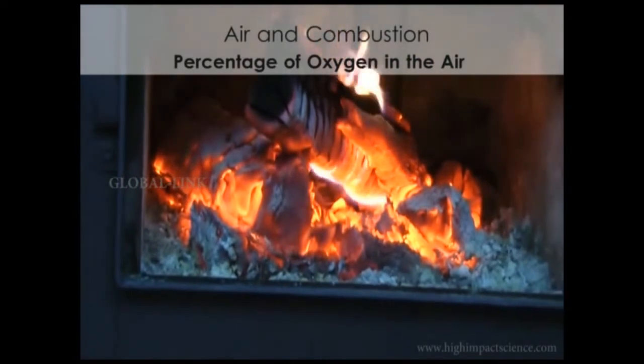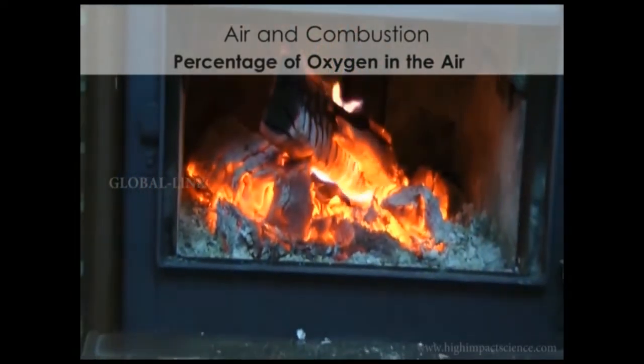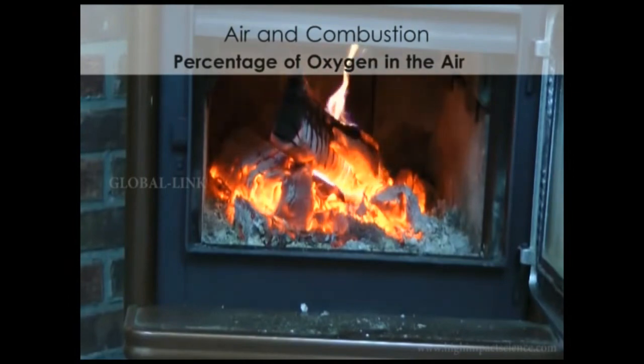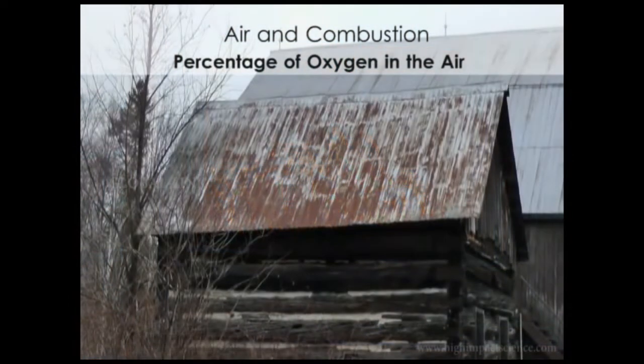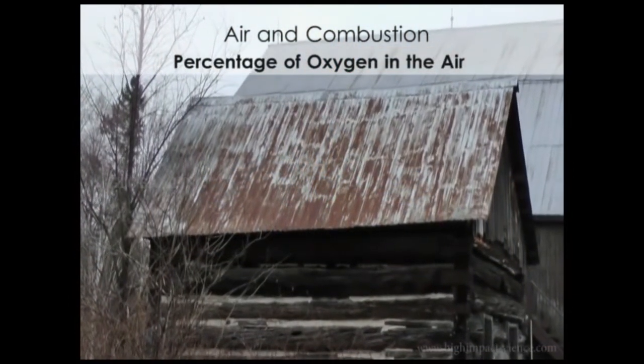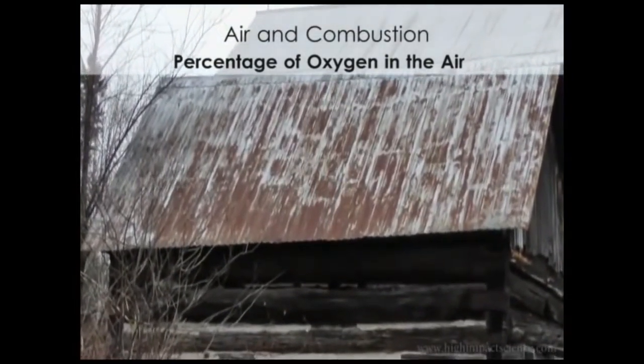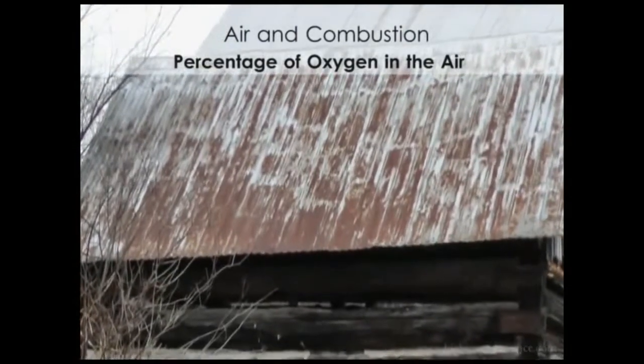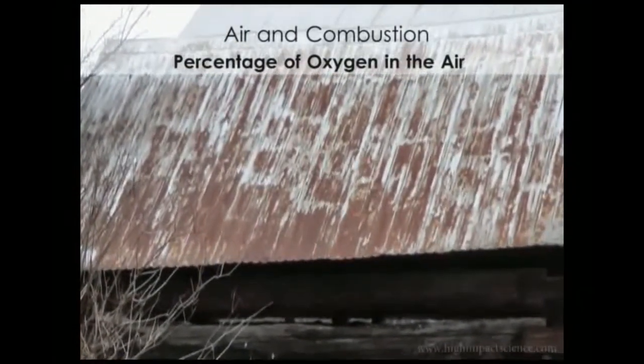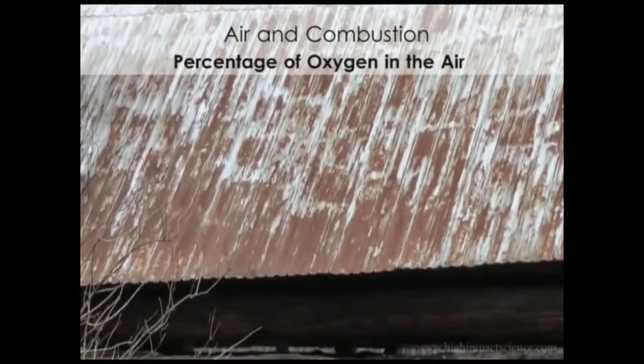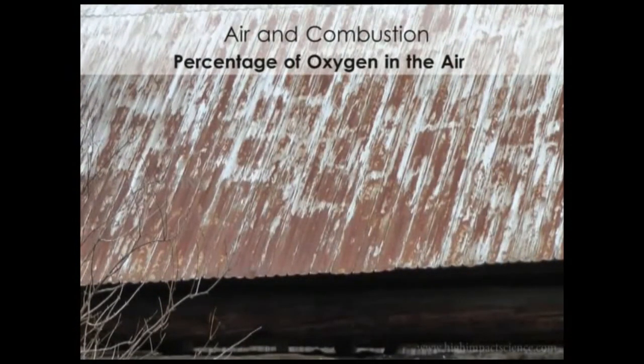Oxidation, or the addition of oxygen to a substance, does not necessarily have to occur when heating is involved. For example, over a period of time oxygen will combine with iron, producing rust. The ugly reddish-brown color on this roof is rust—it is a form of iron oxide. It is an oxidation process that occurs slowly without any heating involved.